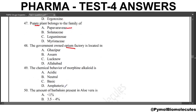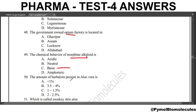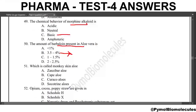Next question: the chemical behaviour of the morphine alkaloid is? The answer is basic nature. The amount of barbaloin present in aloe vera is? The answer is 3.5 to 4 percent. Barbaloin is present in aloe vera.